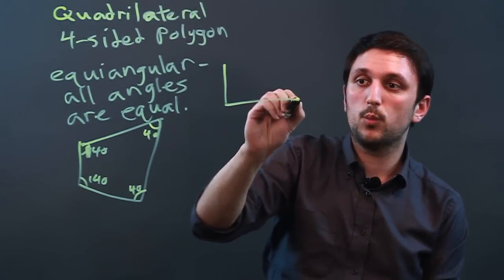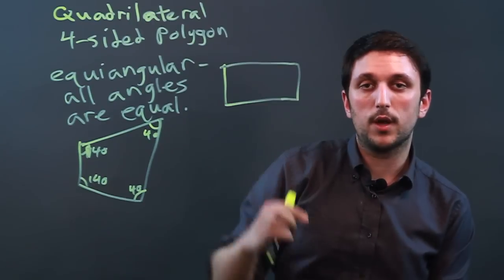However, a rectangle, which is a quadrilateral, has all four right angles.